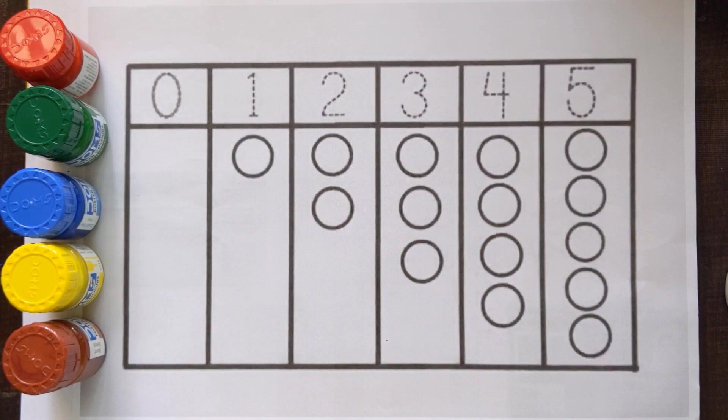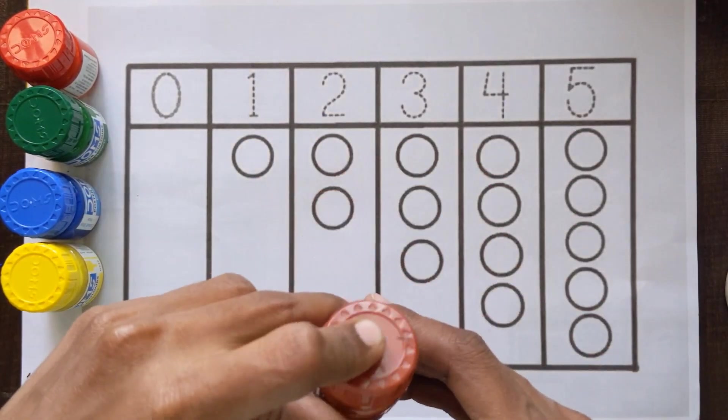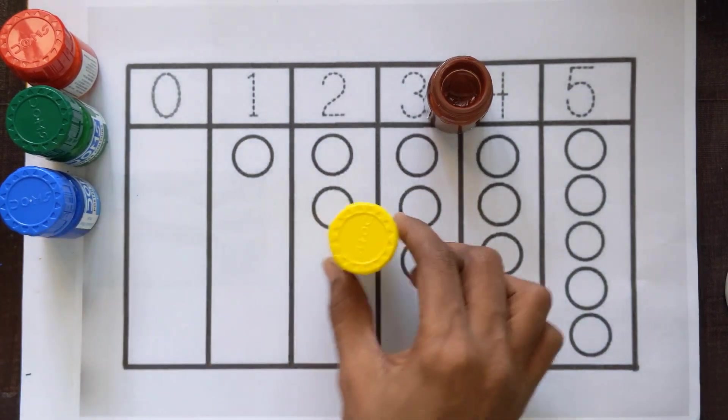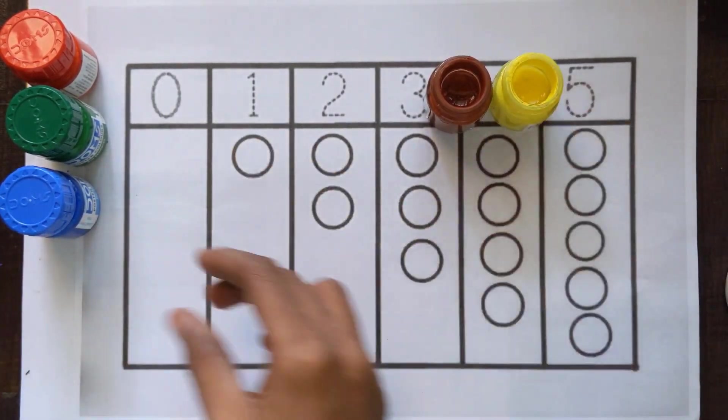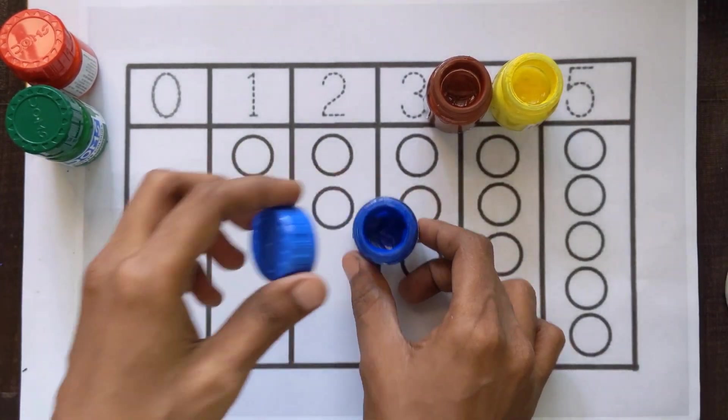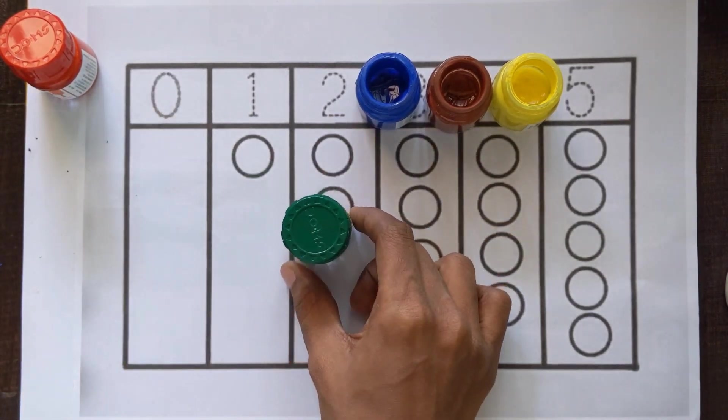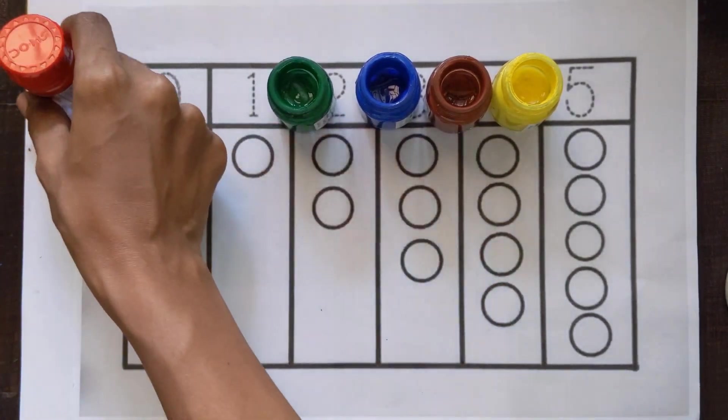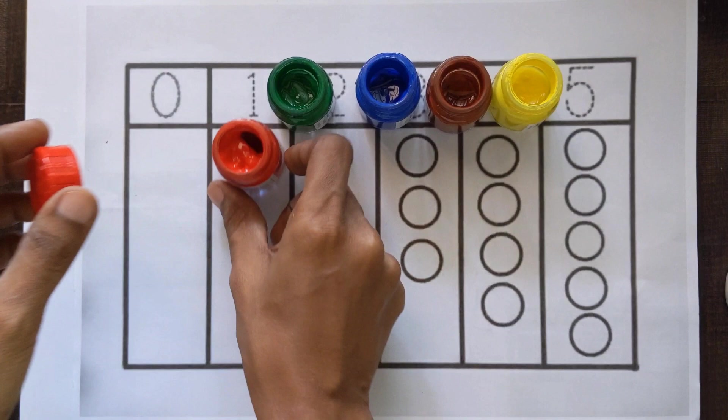Learn some color names. Brown color, yellow color, blue color, green color, and red color.